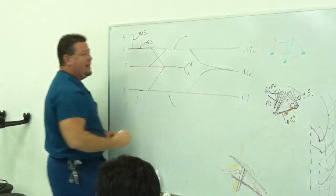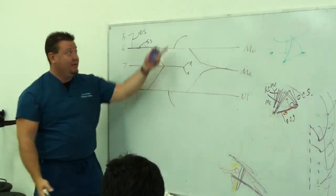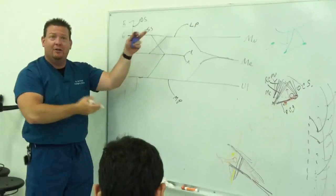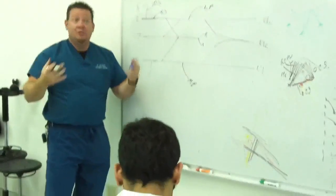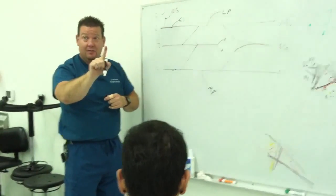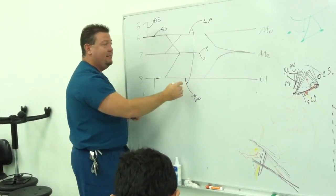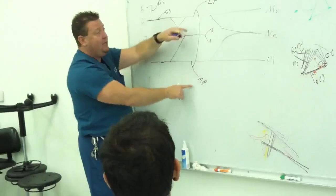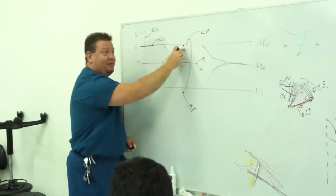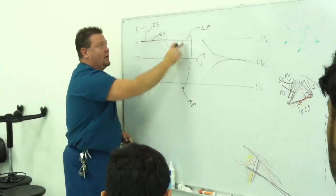Coming off here are the medial and lateral pectoral nerves. Which is medial? Anatomical position — this is medial, that's lateral. So this is the medial pectoral nerve and this is the lateral pectoral nerve. But both of those pectoral nerves run the pectoralis major, right? So those two nerves have to be coordinated together because it's two nerves running one muscle. They're connected — that's why you see that little loop on the diagram, those two nerves are connected to each other. The medial pectoral nerve and lateral pectoral nerve are named after the cord they come off of — medial cord, lateral cord.